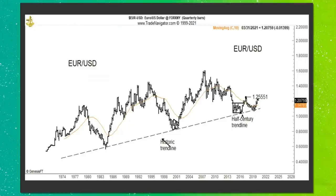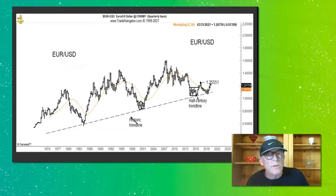I have here the long-term chart that goes back into the 70s, really before the Euro existed. The Euro currency hasn't been around 50 years. What we do as a proxy is take the trade-weighted basket of the European currencies that existed at the time — French franc, Deutschmark, Italian lira, and so forth — and we create a proxy that pre-existed the Euro. Therefore, we can create a chart that goes back into the 70s, and that's where we get a 50-year trend line.